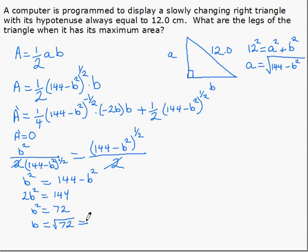and B equals square root of 72, which simplified is 6 root 2.